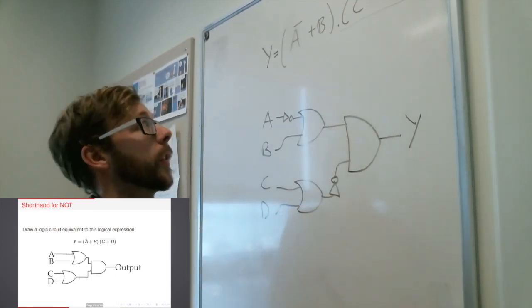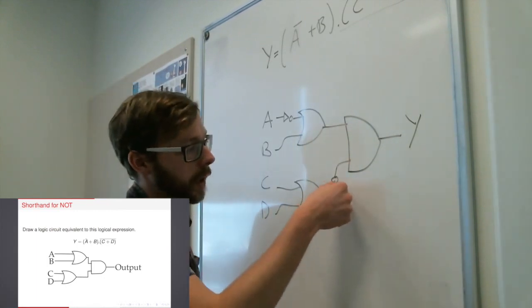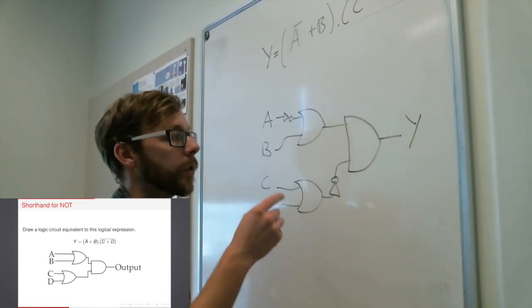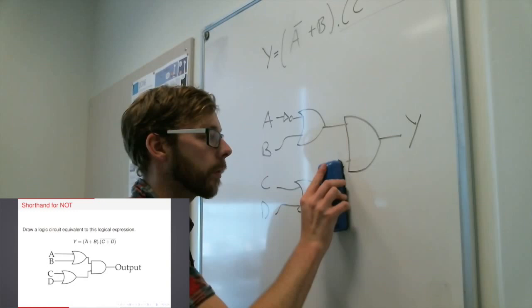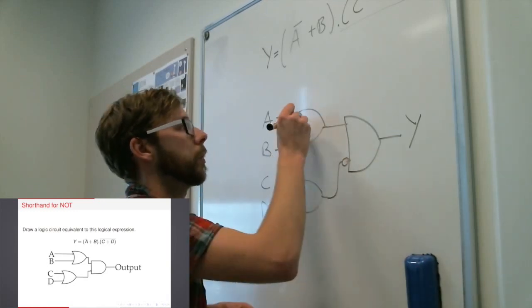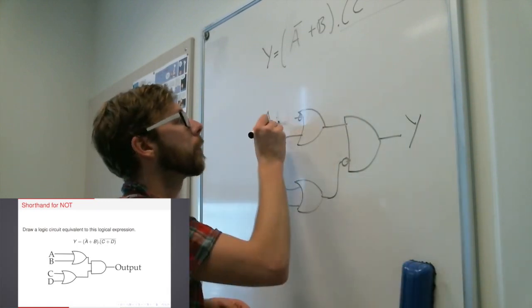The final thing I will mention is that there is a very, very common shorthand for NOT gates. Instead of drawing the triangle and the circle, what you can usually do is what's on the slide there, which is draw a little circle immediately before the input.